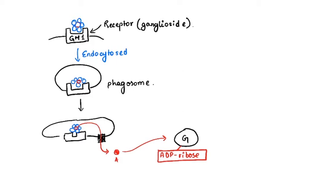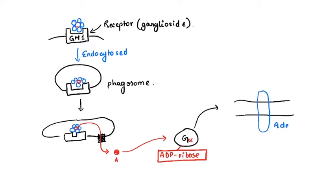This process is called ADP ribosylation. Once the ADP ribose is attached to the G protein, the G protein is continuously in an activated state. The activated G alpha subunit then goes to a protein on the membrane called adenylyl cyclase, and activates it.